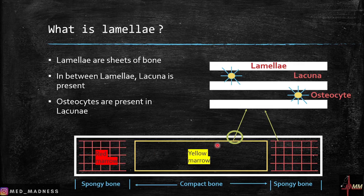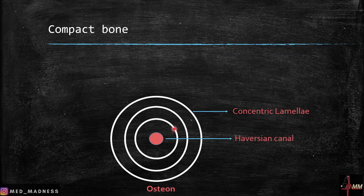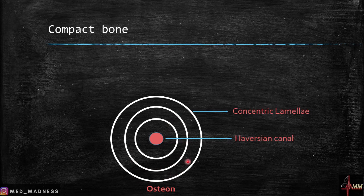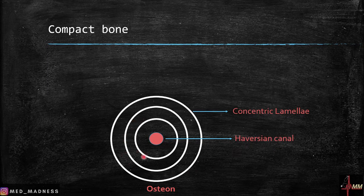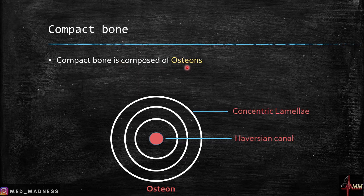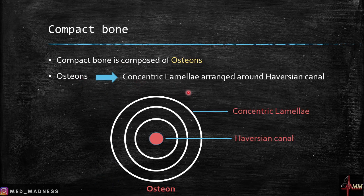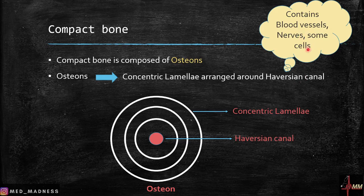Lamellae have different arrangements in compact bone and spongy bone. In compact bone you see concentric lamellae centered around a canal called the haversian canal. This canal contains blood vessels, nerves, and cells that supply the bone. The entire structure of concentric lamellae arranged around a haversian canal is called an osteon. Compact bone is made up of many such osteons.